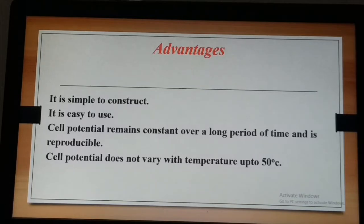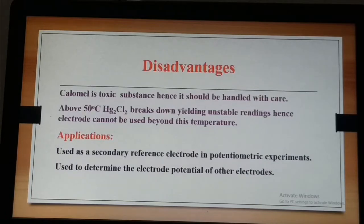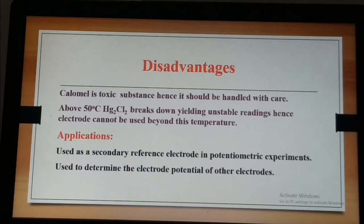There are several advantages of the calomel electrode: it is simple to construct, easy to use, the cell potential remains constant over a long period of time, it is reproducible, and it does not vary with temperature up to 50°C. However, there are disadvantages: calomel is a toxic substance and must be handled with care, and above 50°C, the mercury chloride starts breaking down, so it cannot be used beyond that temperature.